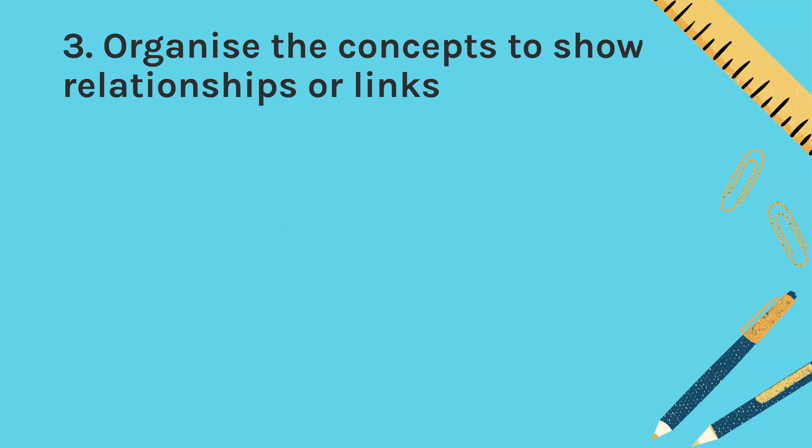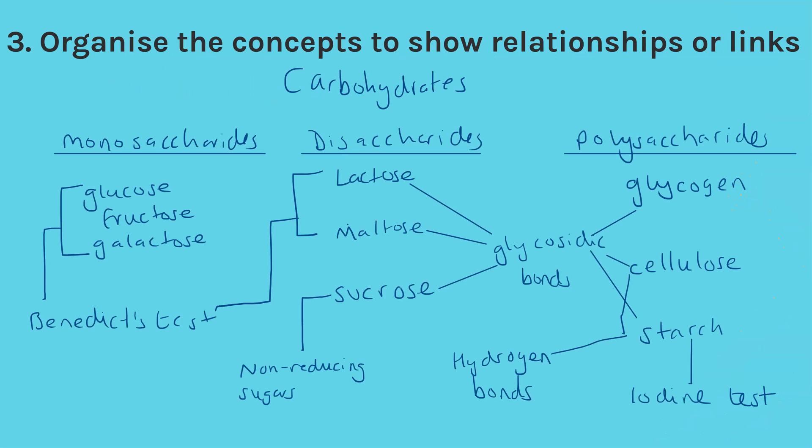Then I'm going to categorize and link these topics. So we're going to be showing the links and the relationships now. So I've now shuffled them all around, and I've put the key types of carbohydrates at the top, and I've then put my examples under the correct subheading. I've then linked to show that the Benedict's test, so that is for the reducing sugars, and that is the five that I've highlighted. And the non-reducing sugar is sucrose. I've then shown that these six examples all have glycosidic bonds, and hydrogen bonds are in cellulose and starch. And lastly, I've got the test for starch is the iodine test.